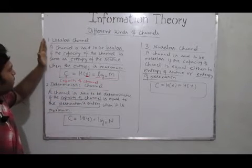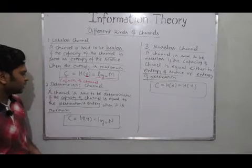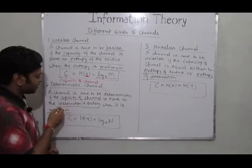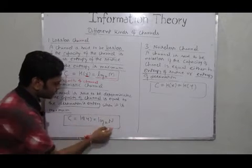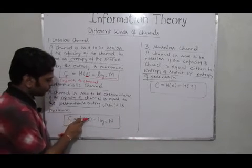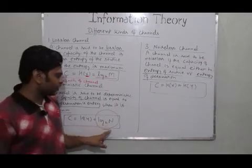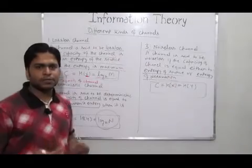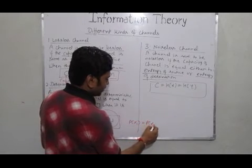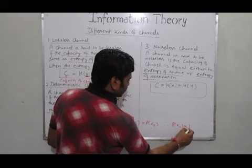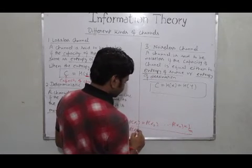When we come to the deterministic channel, it is basically the channel where the capacity of the channel is equal to the destination's entropy when it is maximum. This can be formulated as: the capacity of the channel is equal to the entropy of the destination symbol when it is maximum. This is maximum only when the events occurring are equiprobable — occurring with the same probability.